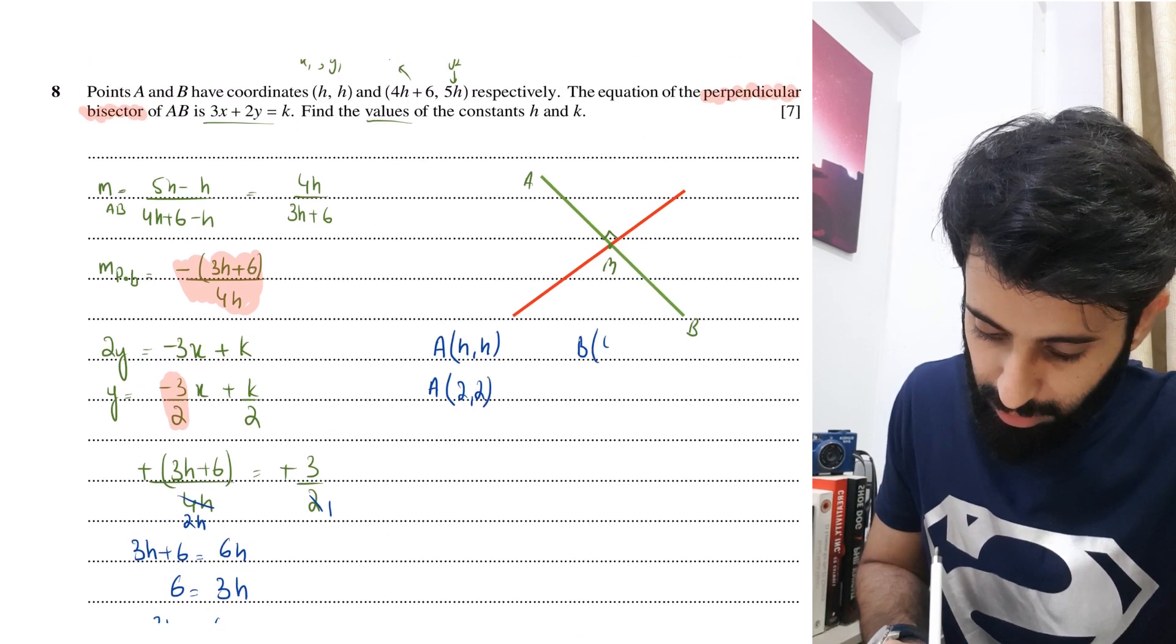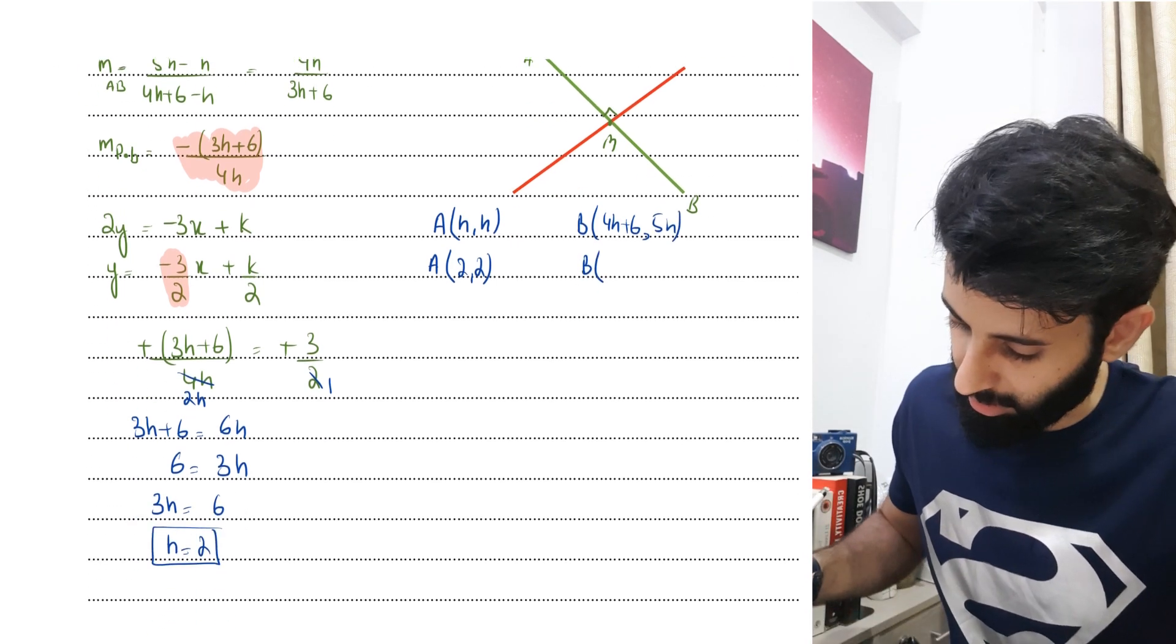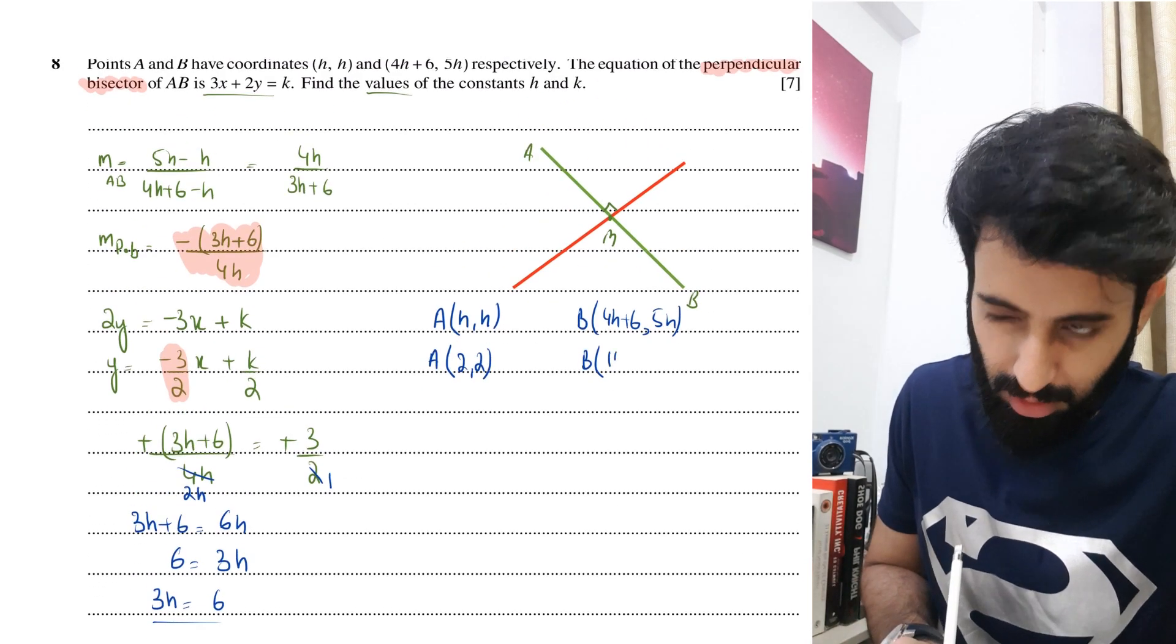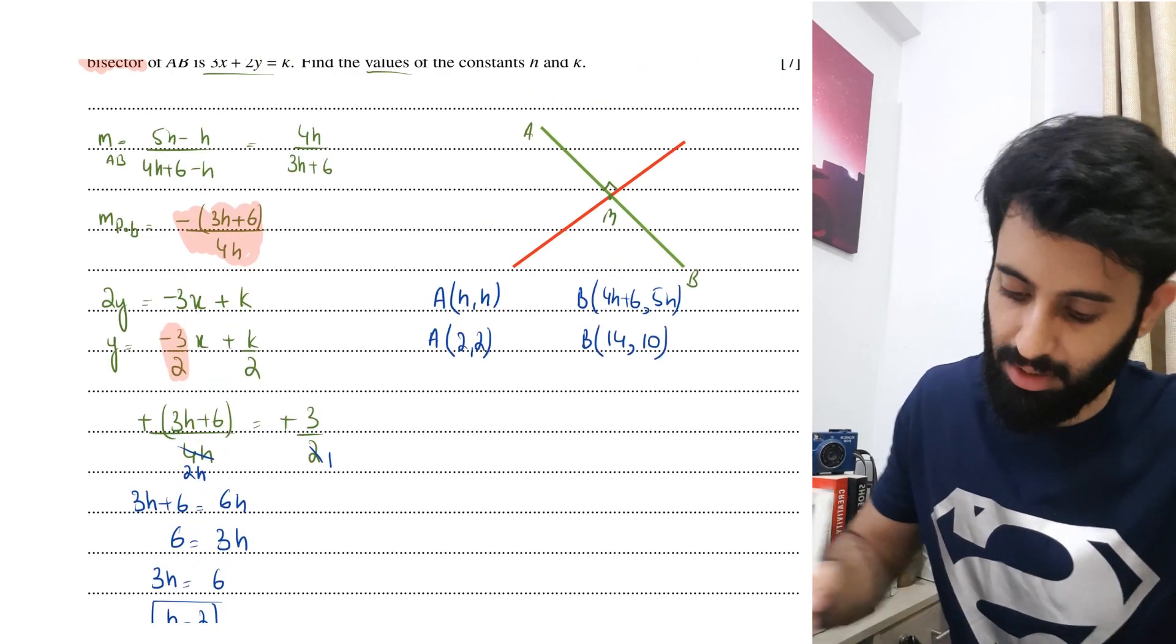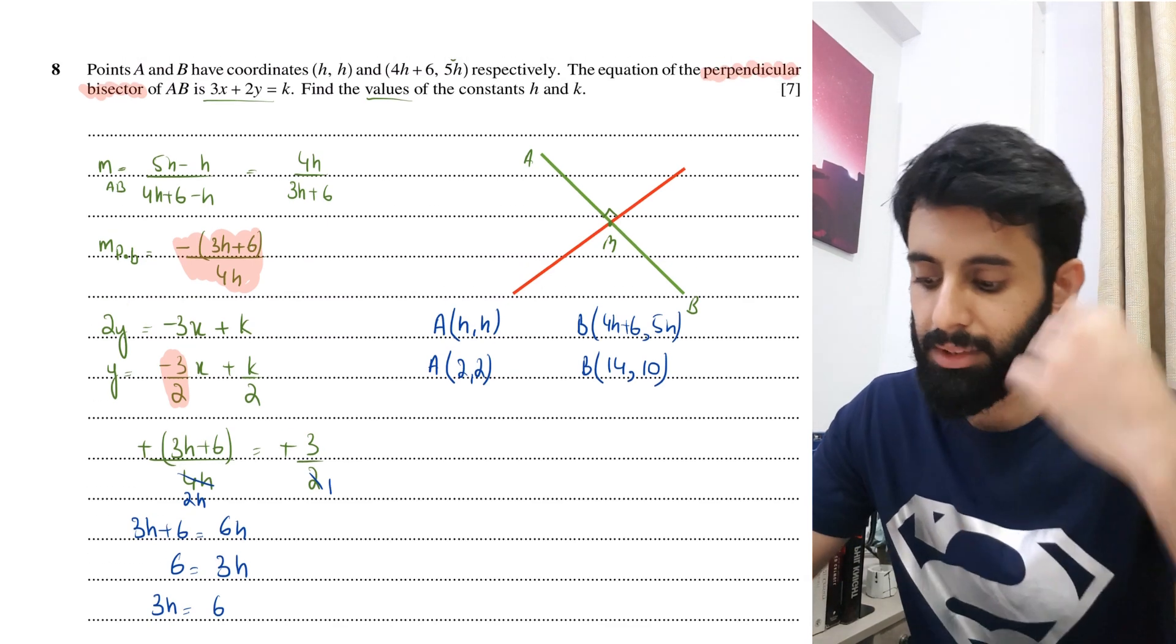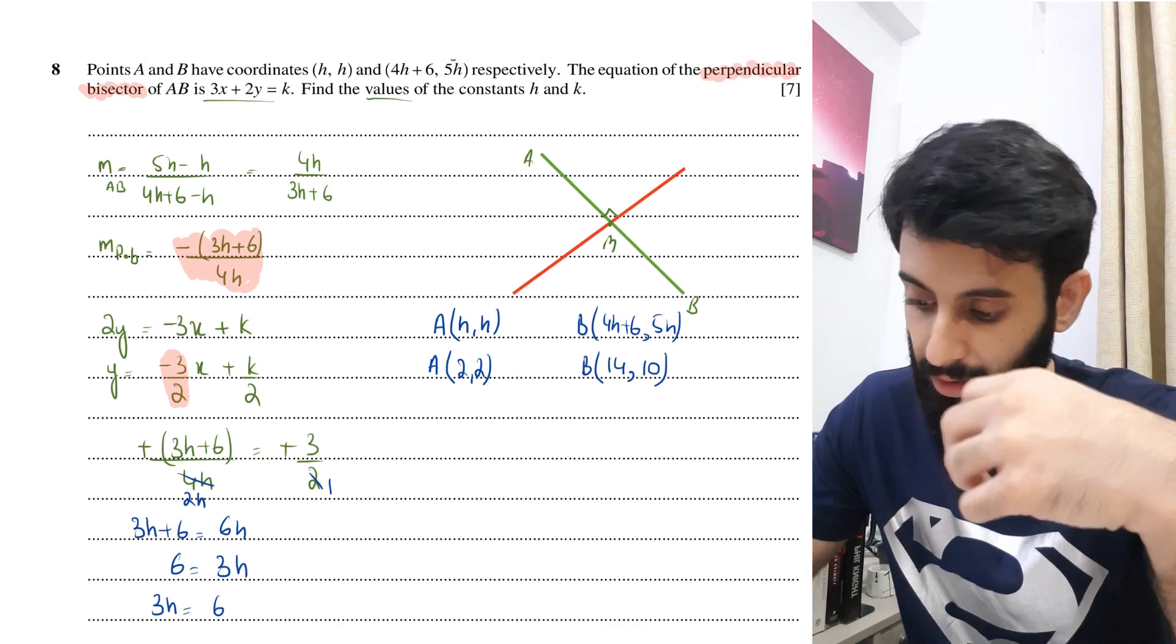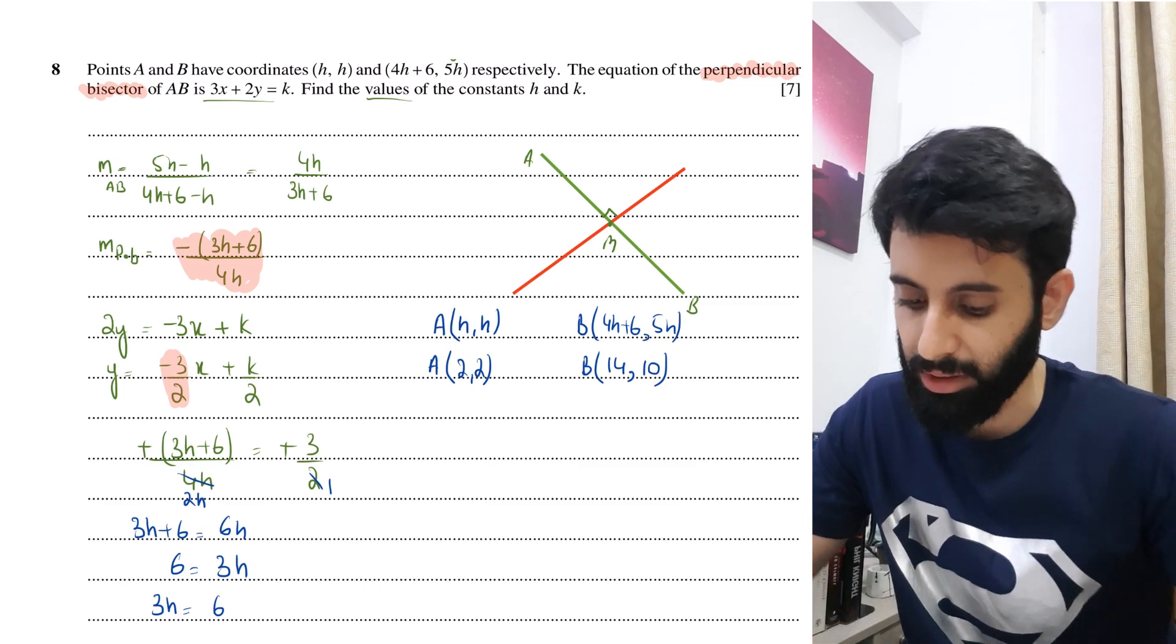And B, which was basically (4h+6, 5h), is now 4 times 2 is 8, 8 plus 6 is 14, and 5 times 2 is 10. So B is (14, 10). That means now I know what the actual coordinates of A and B look like. Now, we have the equation of the perpendicular bisector of AB. So, how can we put all this together and find out what k is?